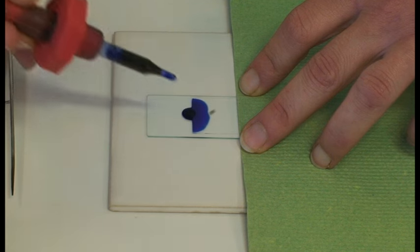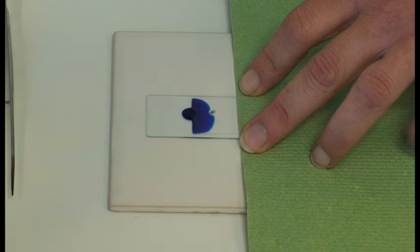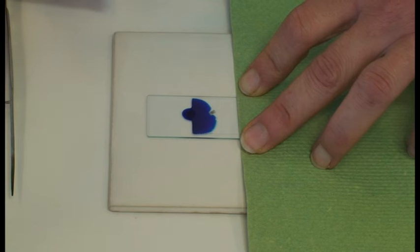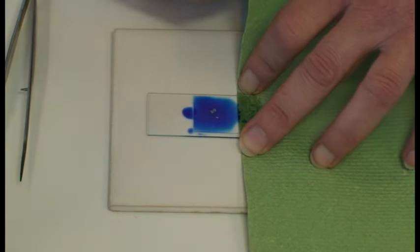The paper towel or filter paper will soak up the water from under your cover slip and as this happens the methylene blue should follow the path of the water and the stain will be drawn under the cover slip.